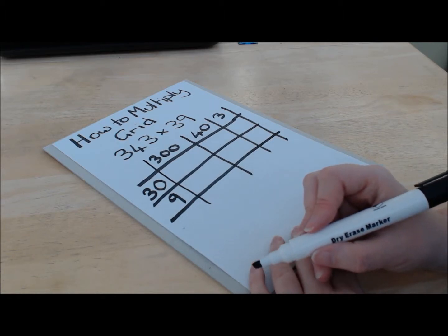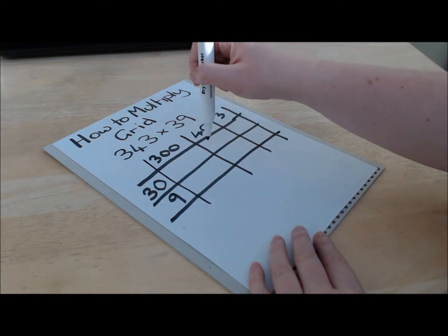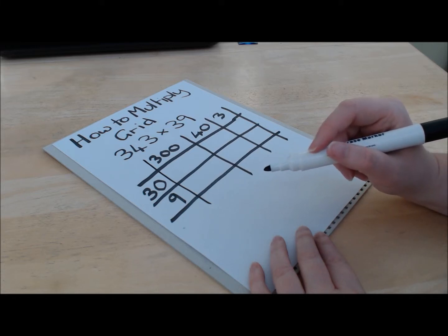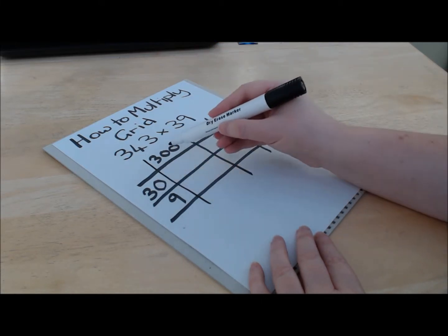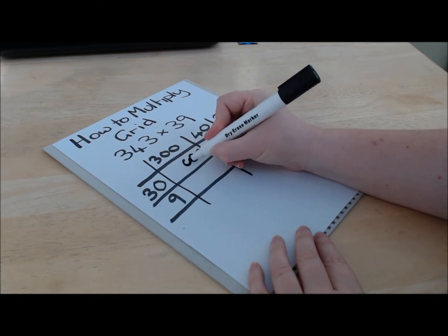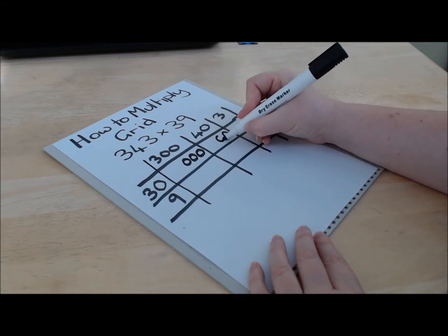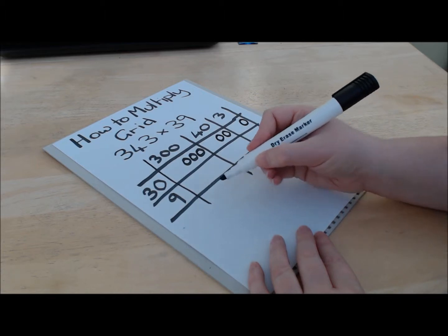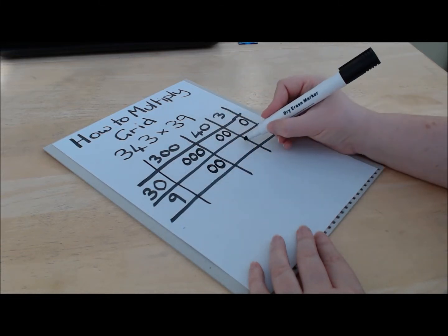Now what we're going to do is multiply each pair that correlates to the square — whichever square you're in, it's the number above and the number to the left that you need to multiply together. One of the things you can do is put all the zeros in first. This times this is going to end up with three zeros on the end, so we can put those in to start with. Now 30 times 40 will end up with two zeros, and 30 times 3 is going to have one zero on the end. Then 9 times 300 is going to have two zeros, and 9 times 40 is just going to have one.